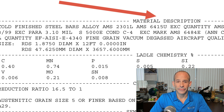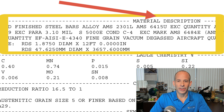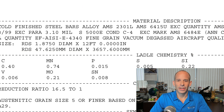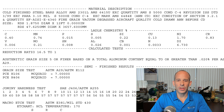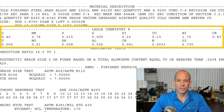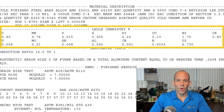Next we have a section that describes the material alloy, dimensions, condition, and the applicable specifications and their revision level — quite a lot of information packed in here. Chemical composition is shown in the next section.